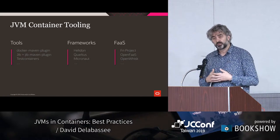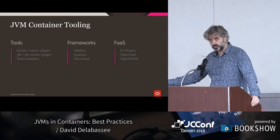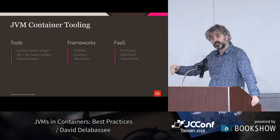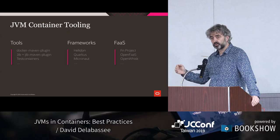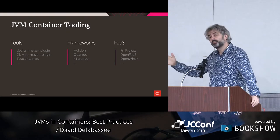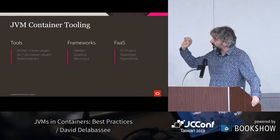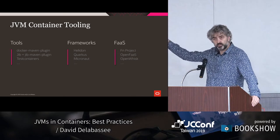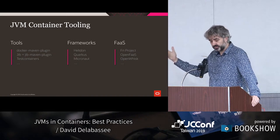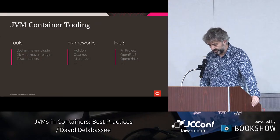Next to that we have the FaaS world — the Function as a Service world — where many platforms provide Java support using containers. If you look at all the serverless platforms out there, they are all based on containers, either explicitly like FN Project, OpenFaaS, or OpenWhisk, or implicitly like Amazon Lambda. What I discuss today applies to using Java within microservices frameworks and within the serverless space, because at the end of the day, it's just a JVM running within a container.